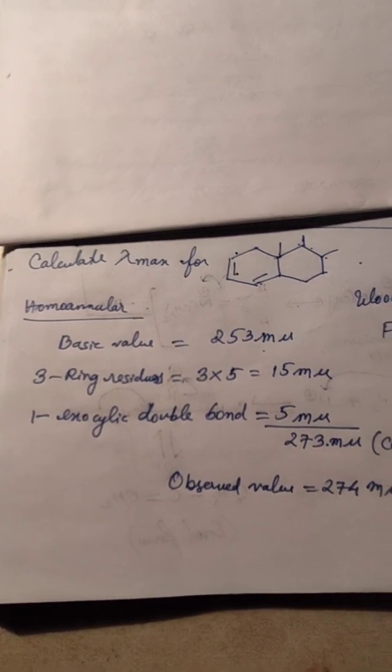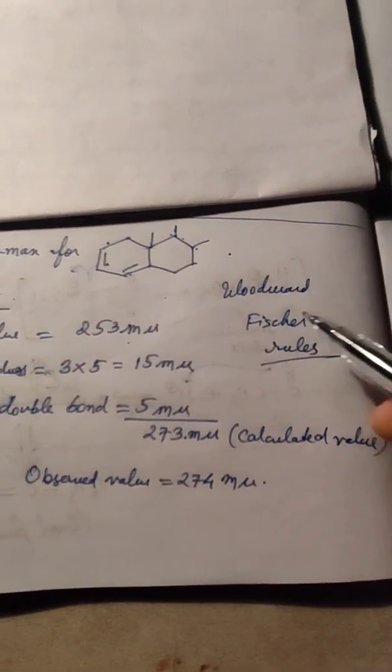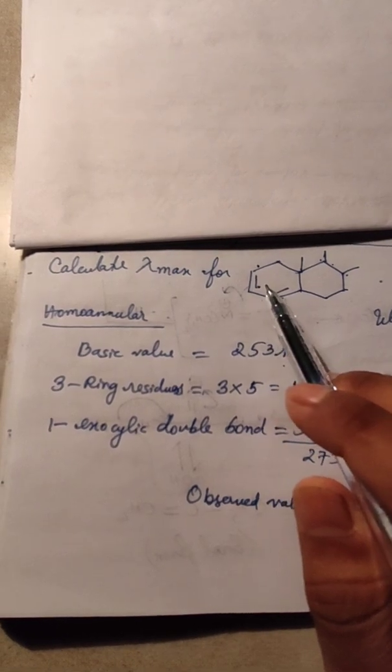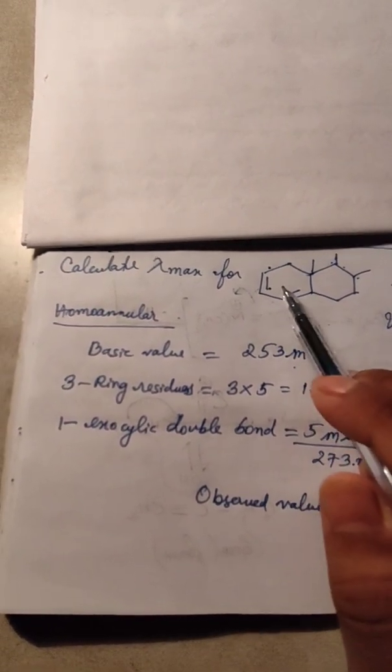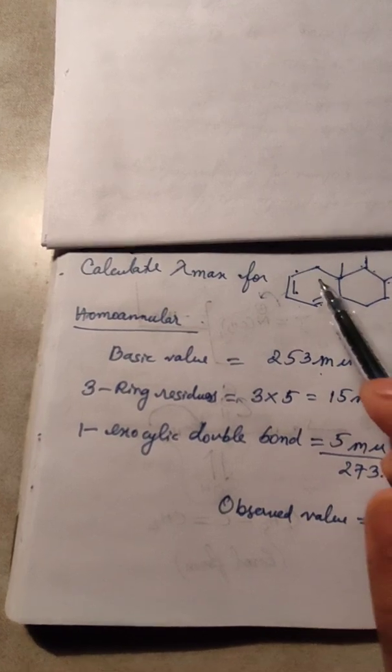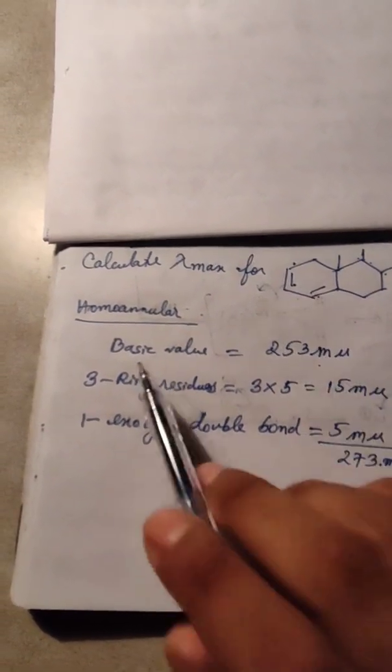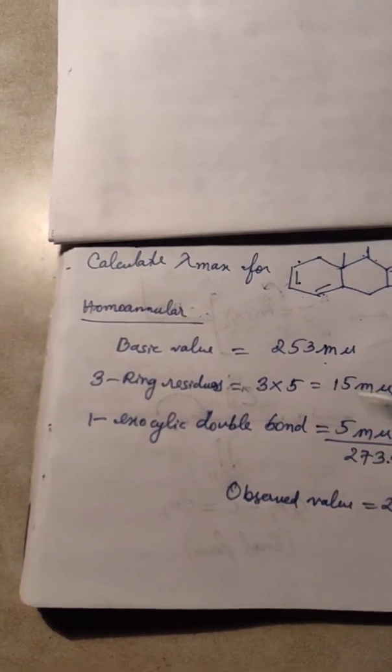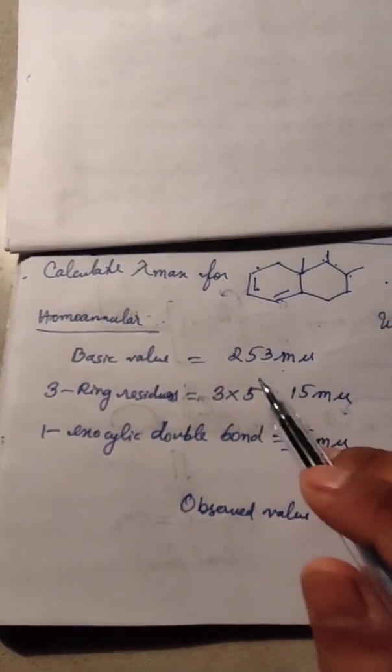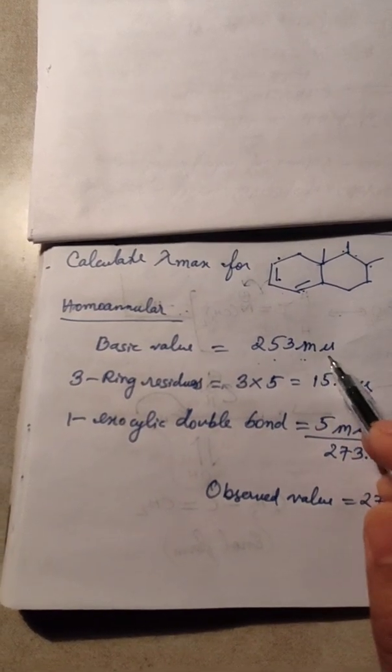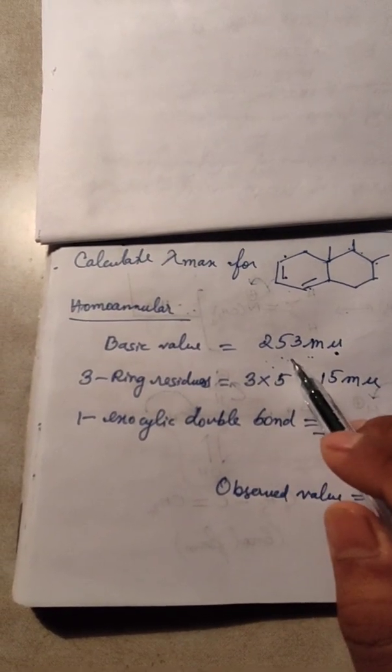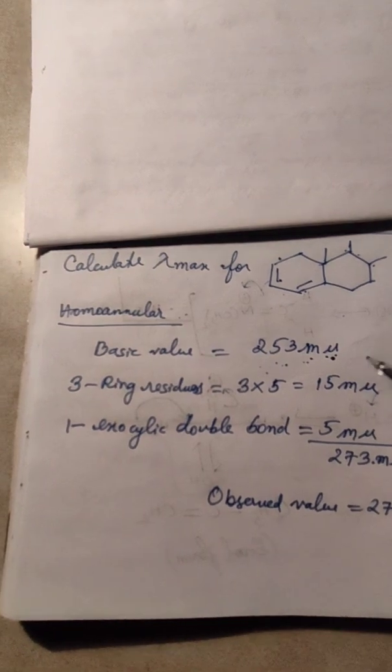First, when the double bonds are present in the same ring, we call it homo-annular conjugated diene. The basic value of homo-annular conjugated diene is given by 253 millimicrons.